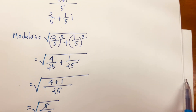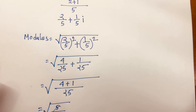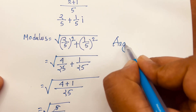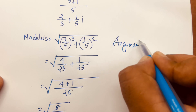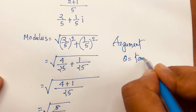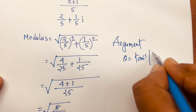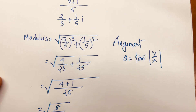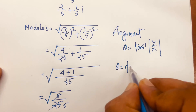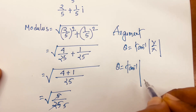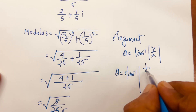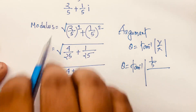Now we'll find the argument. The argument theta equals tan inverse of y over x. Here y is 1 over 5 and x is 2 over 5, so theta equals tan inverse of (1 over 5) divided by (2 over 5).